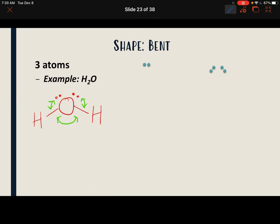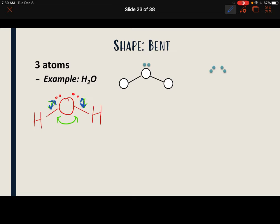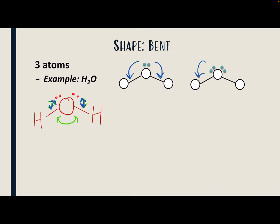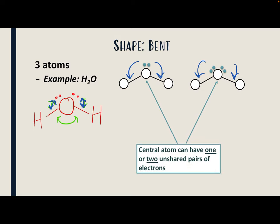Now there's another shape with three atoms that does have an unshared pair — our example is water. This is the example I used earlier: those unshared pairs are actually repelling the bonds, pushing the bonds downward and causing the molecule to bend — hence the bent shape. To have a bent shape, your molecule is going to have three atoms with unshared pairs on the central atom.